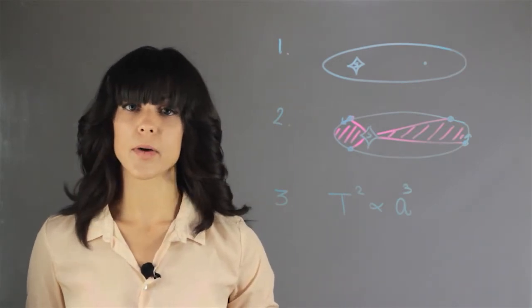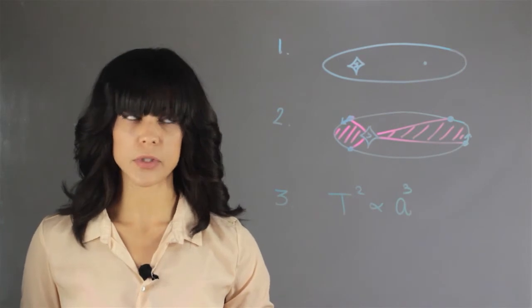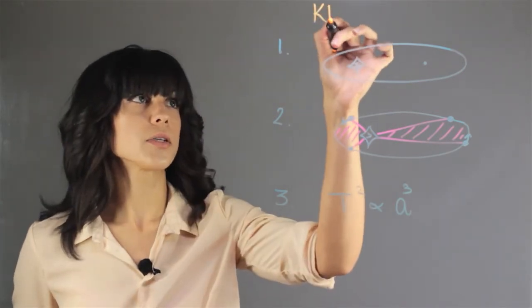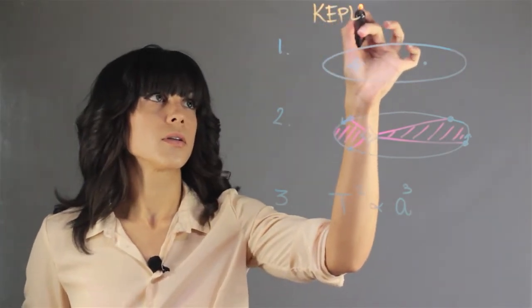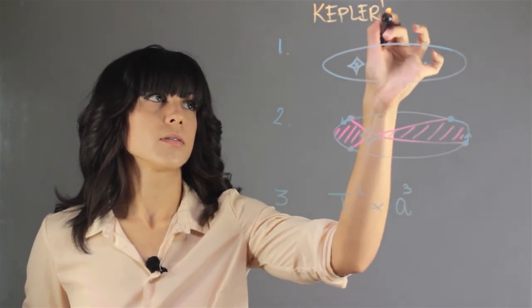Kepler came up with three laws of planetary motion, and these are Kepler's laws.